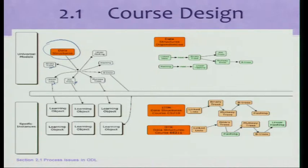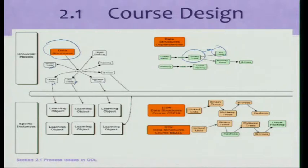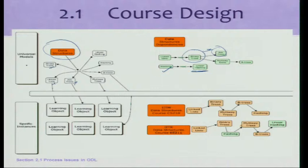The interesting thing about these topics is they actually follow a dependency. Before you can talk of AVL trees, the student should know about binary trees. Before you can talk of binary trees, you should have talked about linked lists. Before you can talk about linear hashing, you should have talked about hashing. So these topics subscribe to this dependency diagram. These topics and dependencies are universal — I call them universal models. This is a property of the domain, not a property imposed by an individual expert.